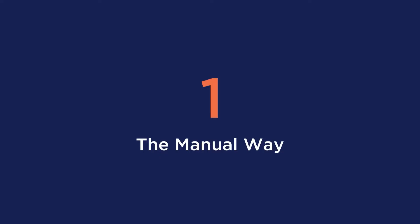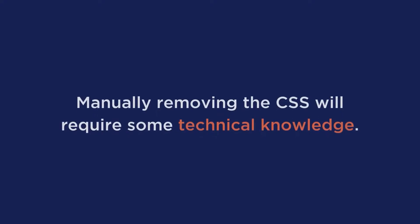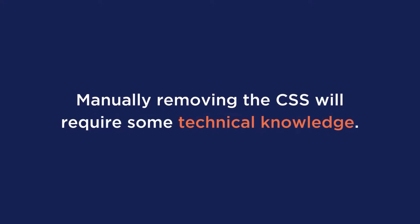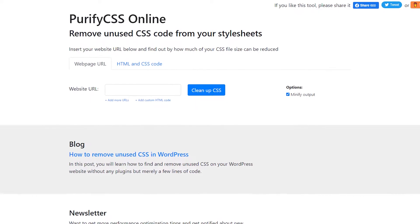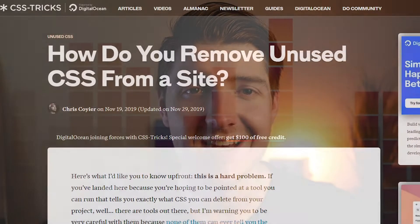Now let's talk about how to remove unused CSS manually and with plugins. Manually removing CSS files requires some technical knowledge. If you want to remove unused CSS files entirely, you can use a tool such as PurifyCSS to find out how much CSS can be reduced. Once you get the CSS code you should eliminate, you have to remove it manually from the page.